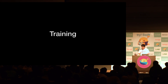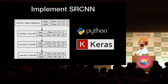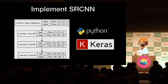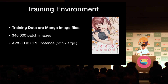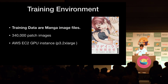First, I had to train the deep learning model. I implemented a neural network using Python and Keras. This is almost the same architecture as described in the paper. The training environment is here, and the most important thing is to use manga image files as training data.